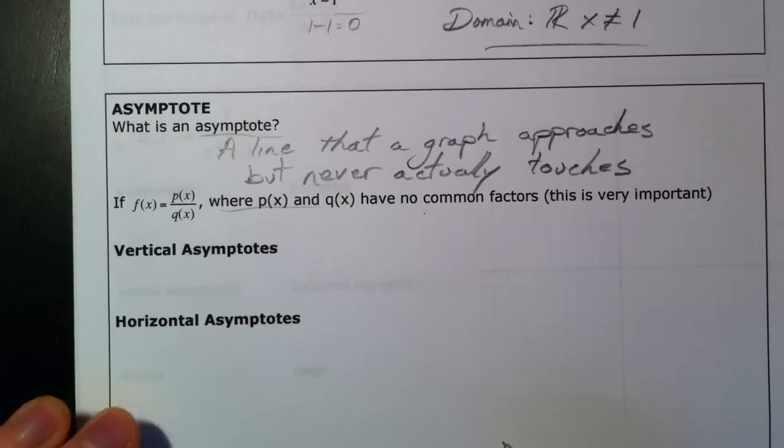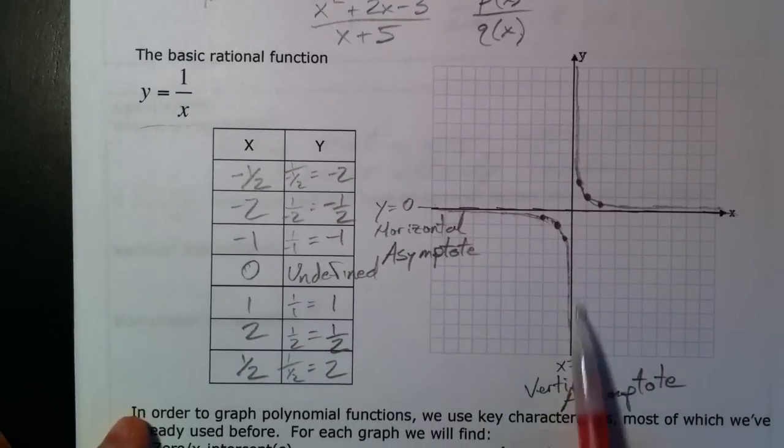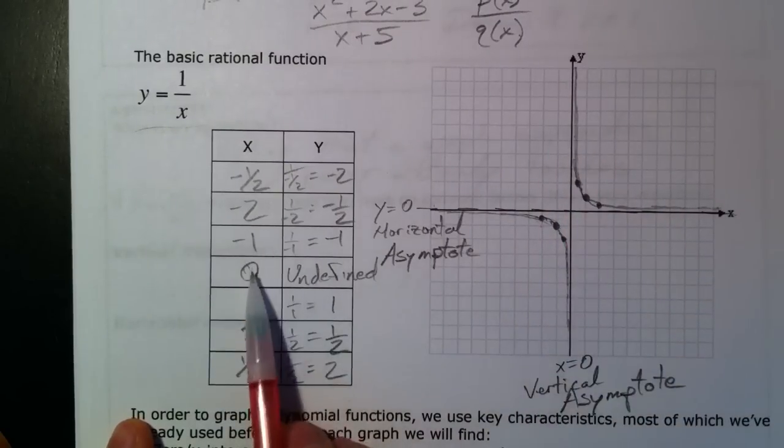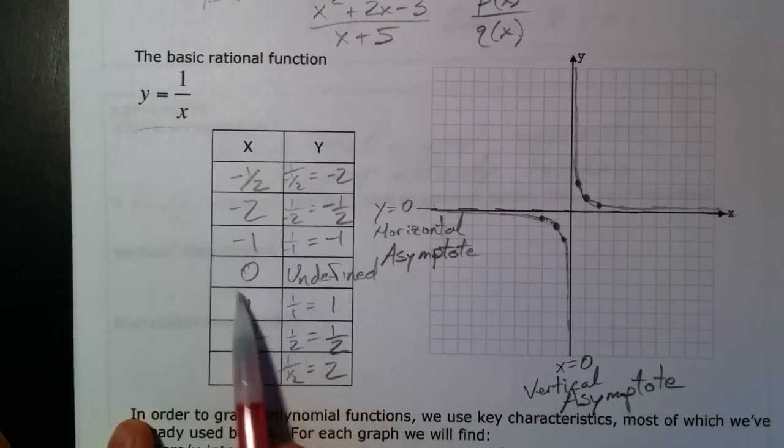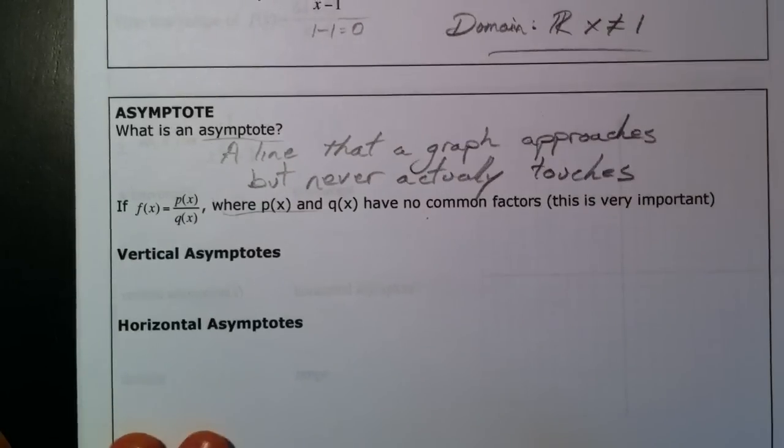So, for vertical asymptotes, the vertical asymptote on our original graph showed up at x equals 0. The problem with x equals 0, that was the one that was undefined, that was the one we couldn't use. And so, our vertical asymptotes and our domain are going to be very similar.